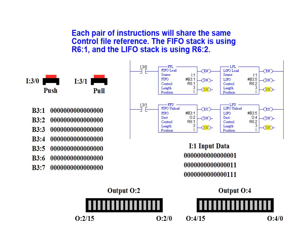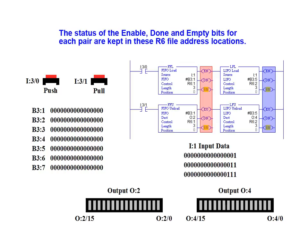Each pair of instructions will share the same control file reference. The FIFO stack is using the R61 file address, and the LIFO stack is using the R62 file address. The status of the Enable, Done, and Empty bits for each pair are kept in these R6 file address locations.